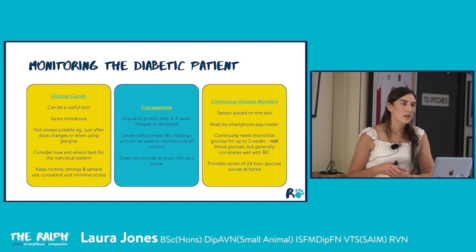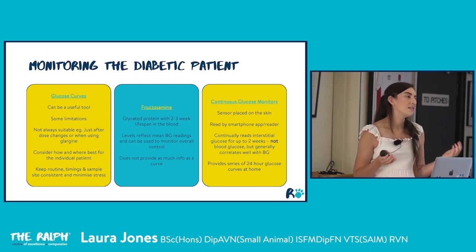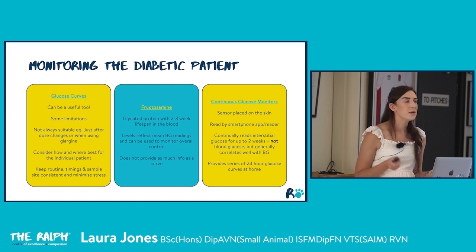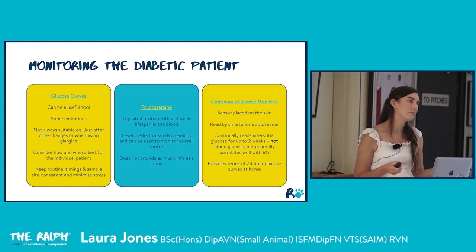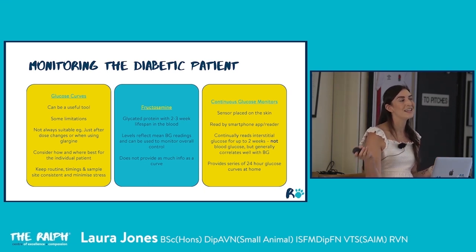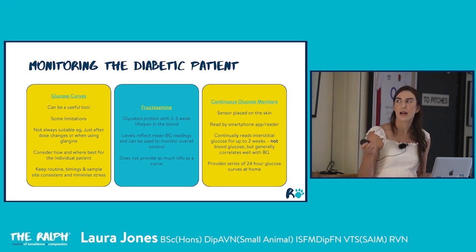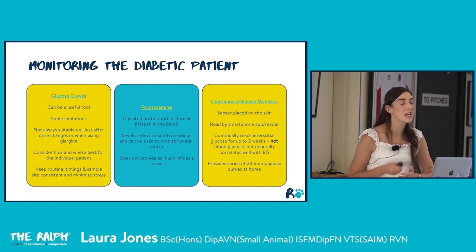Continuous glucose monitors are sensors placed on the skin with a small probe just underneath that measures glucose in interstitial fluid continuously for up to two weeks from one sensor. Clients scan the sensor a few times daily with a reader or smartphone app and get up to two weeks of 24-hour glucose graphs sent digitally. They cost roughly the same as a glucose curve — about £50 — but provide much more information and eliminate the need for ear pricks every one to two hours.